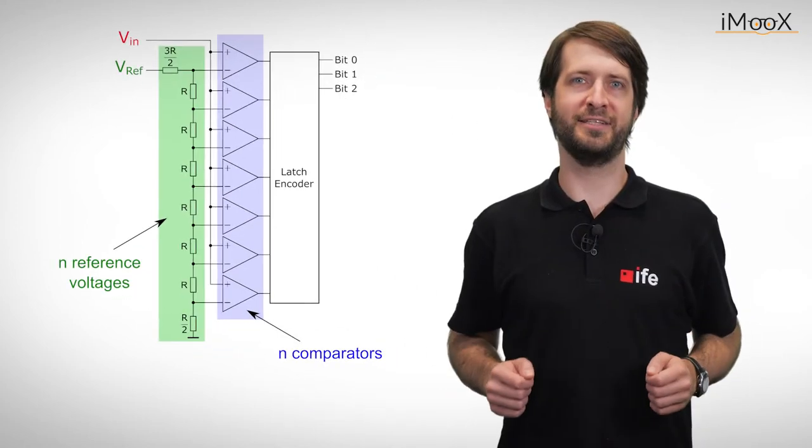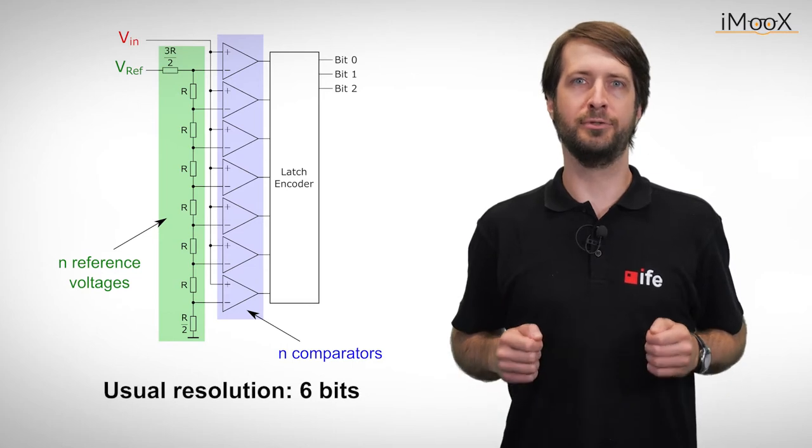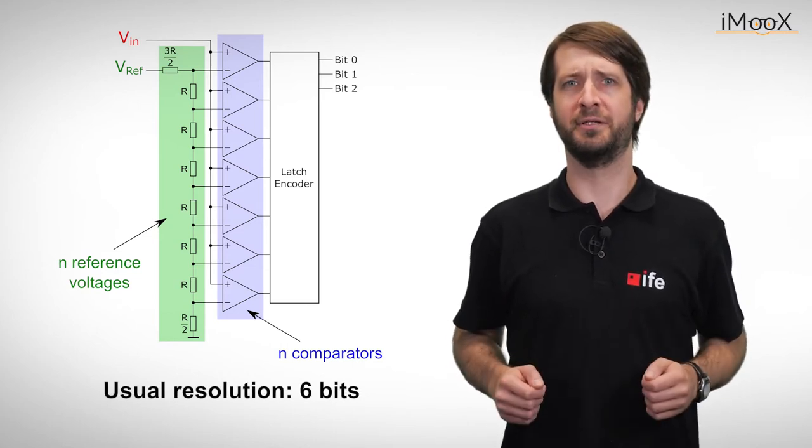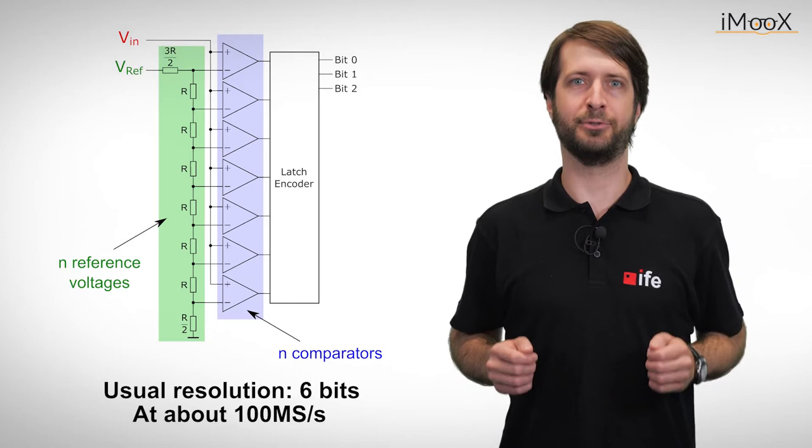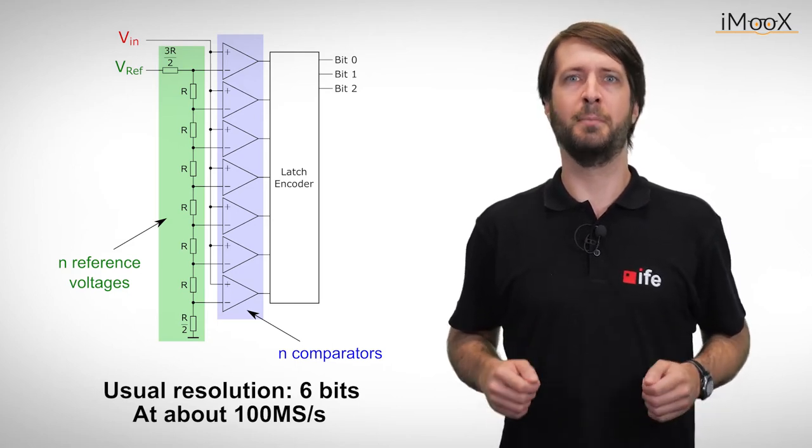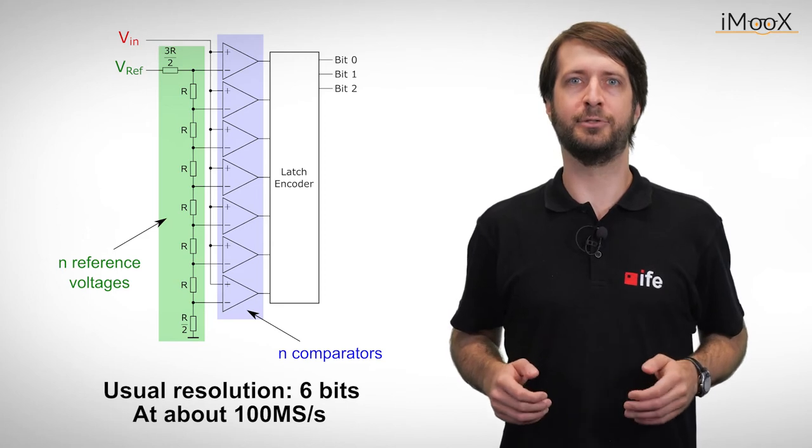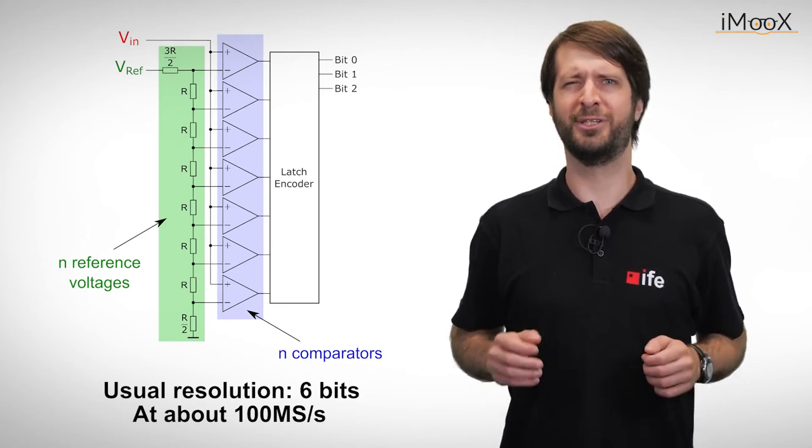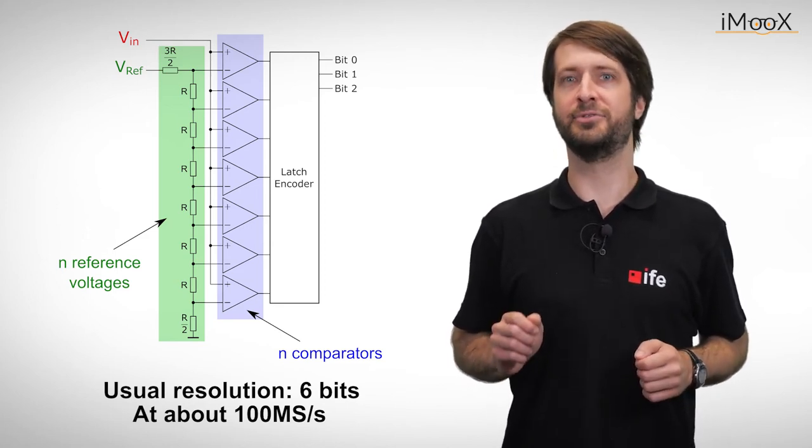Simple flash ADCs usually only have a resolution of about 6 bit, but with quite impressive sampling rates of about 100 mega samples per second. But even these ADCs can reach higher resolutions if we tweak the circuit a little bit and use a simple trick.